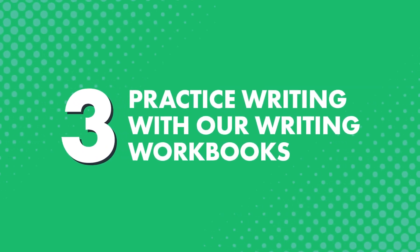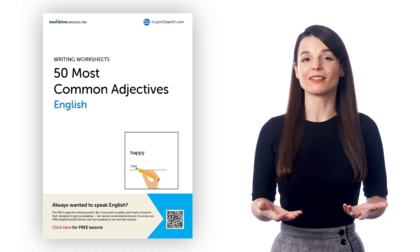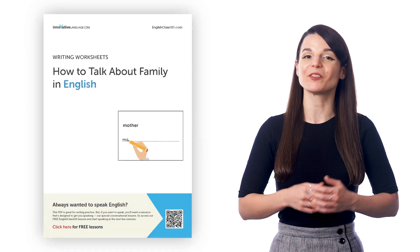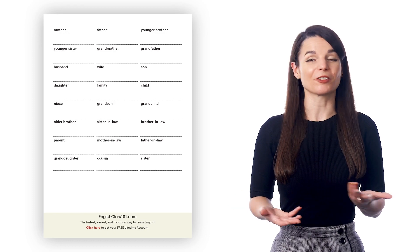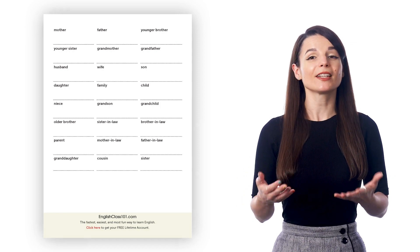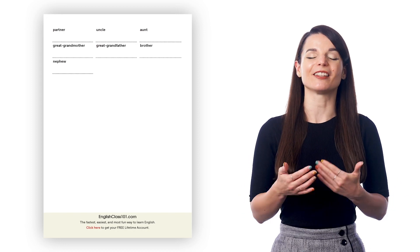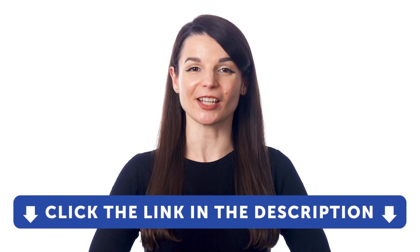Number three: practice writing with our writing workbooks. With our PDF workbooks, you'll learn to write words and phrases around specific themes like must-know adjectives, talking about your day, family, and more. These are specifically designed to be printed out and written in. Inside you'll get the words, their translations, plus blank lines for you to practice writing out the words. In the last section of the workbook, you'll get tested on how well you know each word — you'll see just the translation, and your job is to write the word in the target language. If you want access to these printable resources and our learning system, sign up for a free lifetime account right now by clicking the link in the description.